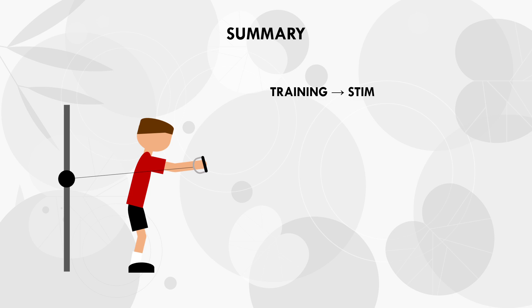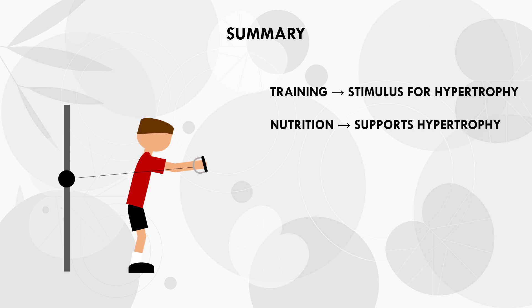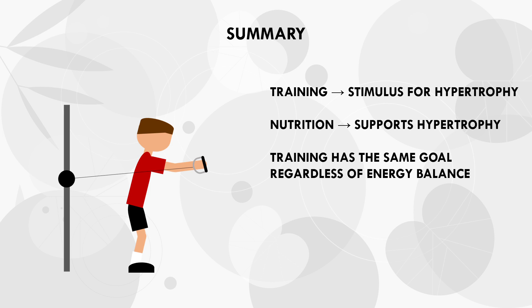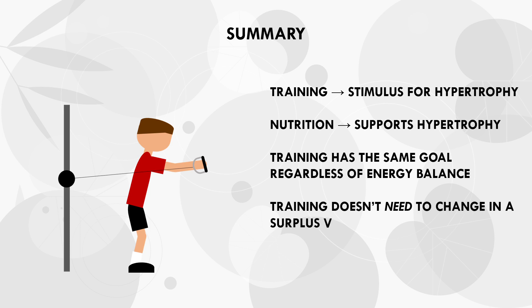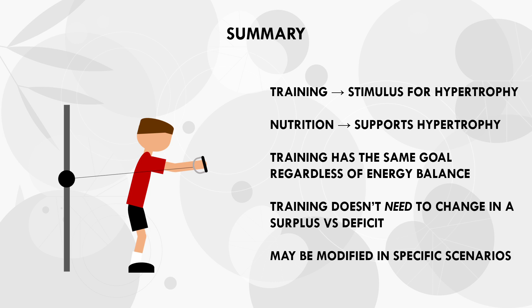To summarize: training is the stimulus for muscle growth, while nutrition supports muscular adaptations. Muscle growth can occur during a deficit, but a surplus is probably required to maximize muscle growth. Therefore, the goal of resistance training is the same regardless of energy balance — to promote hypertrophy adaptations. Training doesn't really need to look different in a surplus versus deficit for those in a relatively lean, healthy body fat range. However, trainees may modify exercise selection to accommodate performance changes and joint tolerance, and volume may be slightly lower in a deficit if high volumes aren't being tolerated well. Ultimately, it comes down to how the trainee feels and how they are responding to their training protocol.